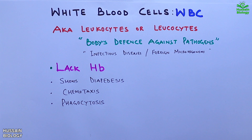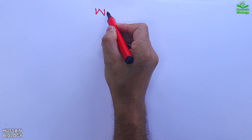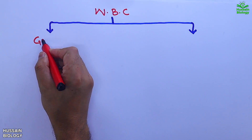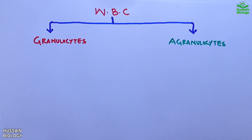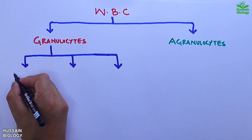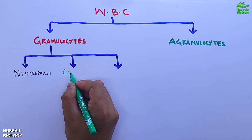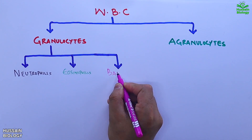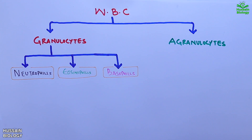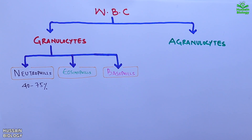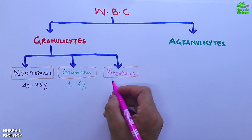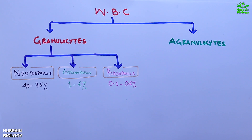WBCs are classified into two classes: granulocytes and agranulocytes. The granulocytes are further divided into neutrophils, eosinophils, and basophils. Neutrophils comprise 40 to 75 percent of total granulocytes, eosinophils 1 to 6 percent, and basophils 0.1 to 0.6 percent.